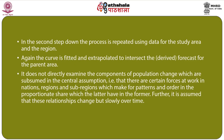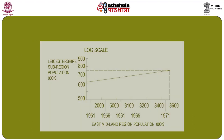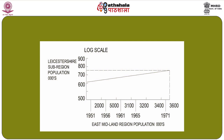In the second step, the process is repeated using data for the study area and the region. The curve is fitted and extrapolated to intersect the derived forecast for the parent area. The ratio method does not directly examine the components of population change; instead it rests on the central assumption that certain forces at work in nations, regions, and subregions make for patterns and order in the proportionate share which smaller areas have in larger ones. It is assumed these relationships change but slowly over time, as depicted in the log scale graphical presentation from 1951 to 1961.